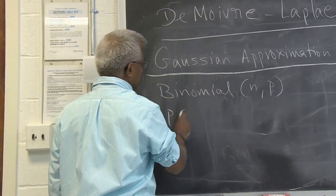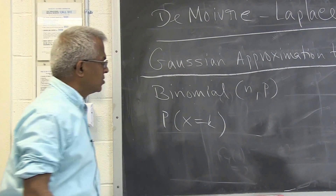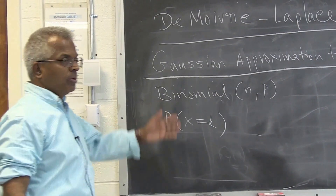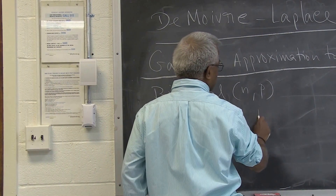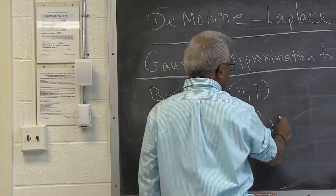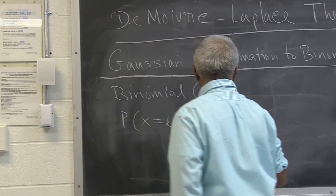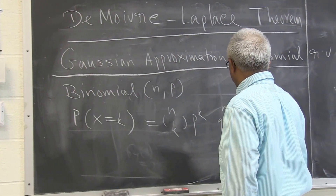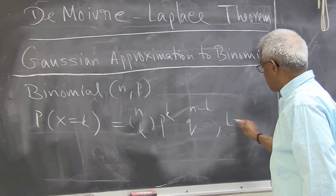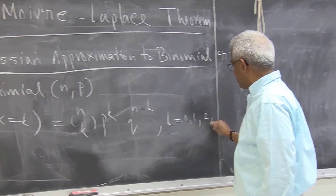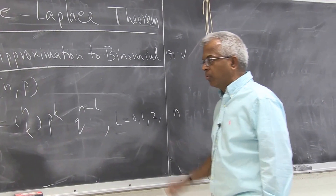If x is the number of heads in n tosses, the probability of getting k heads in n tosses is n-choose-k times p to the power k times q to the power n minus k, for k equal to 0, 1, 2, 3, up to n. This is the binomial distribution.